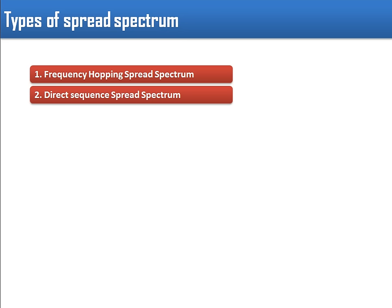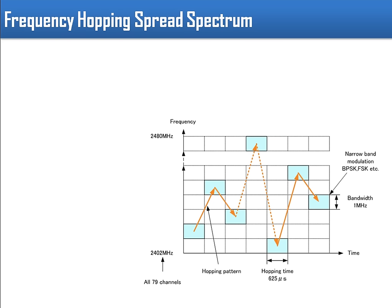We are going to discuss two spread spectrum techniques: Frequency Hopping Spread Spectrum (FHSS) and Direct Sequence Spread Spectrum (DSSS). In Frequency Hopping Spread Spectrum, the entire bandwidth is divided into smaller channels, and the total number of channels is 79.